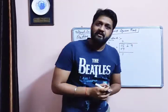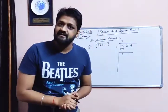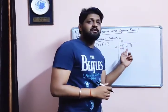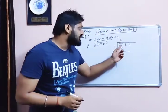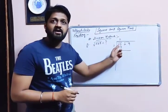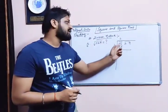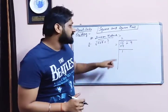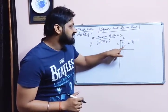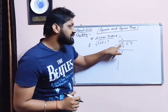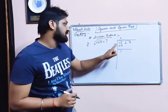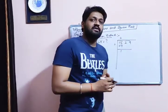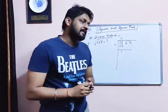So what is the first step? First of all, we have to make the pairs from the right-hand side, and then we have to think of a number whose square is close to or equal to that number. The square 4 is near to 5, so 2 multiplied by 2 is 4 and the remainder is 1.